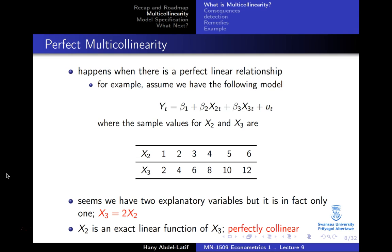Let's give some examples. Assume we have a model where Y is the dependent variable and Y depends on X2 and X3. Looking at the sample for X2 and X3, you might think we have two variables explaining the variation in Y. But in fact there is only one variable, because if you multiply each value in X2 by 2 you obtain X3. So X3 equals 2·X2 — a typical case of an exact linear relationship. X2 is an exact linear function of X3, making them perfectly collinear.